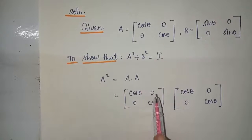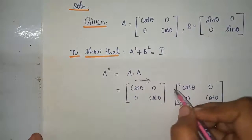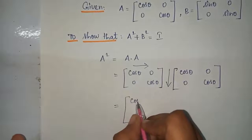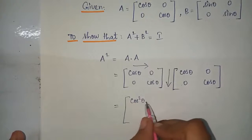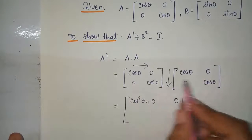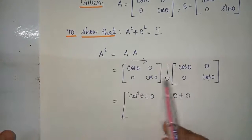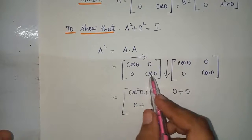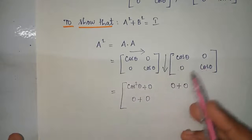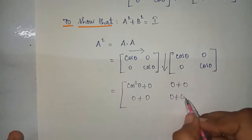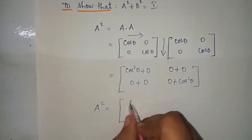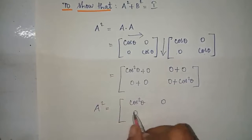First row first column: cos theta into cos theta is cos squared theta plus 0 into 0 is 0. First row second column: cos theta into 0 is 0 plus 0 into cos theta is 0. Second row first column: 0 into cos theta. Therefore A squared equals cos squared theta 0 0 cos squared theta.